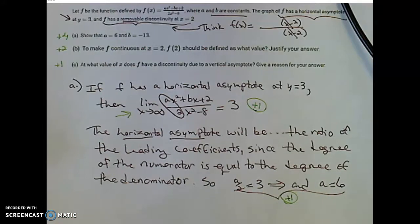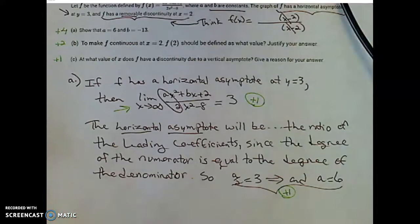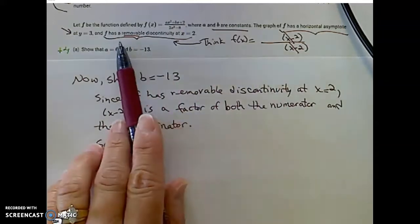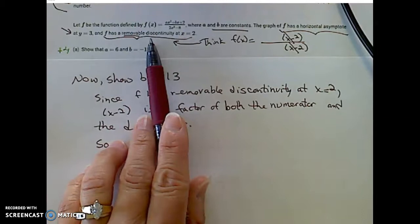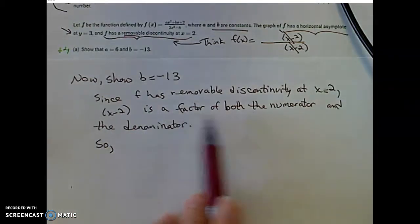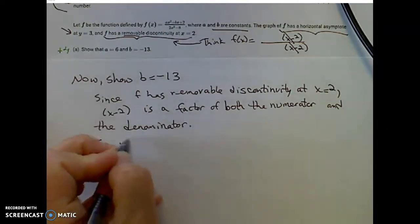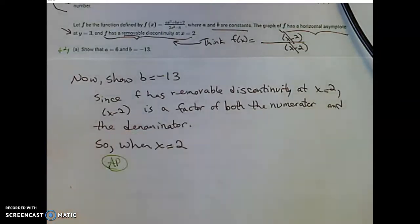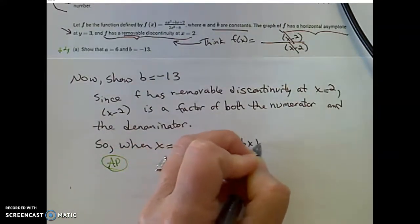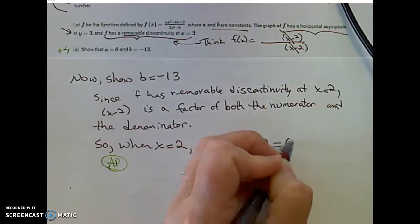So we found that a is equal to 6. Now we have to show that b is equal to negative 13. Since f has removable discontinuity at x equals 2, x minus 2 is a factor of both the numerator and the denominator. The AP solution said it this way. So when x is equal to 2, if x minus 2 is a factor, that means that the numerator, ax squared plus bx plus 2, must equal 0 when x equals 2, if that is a factor.